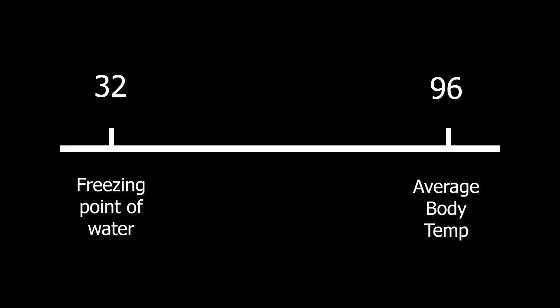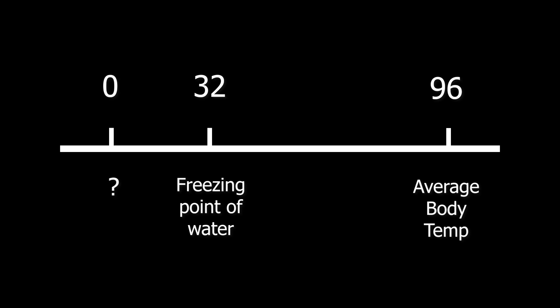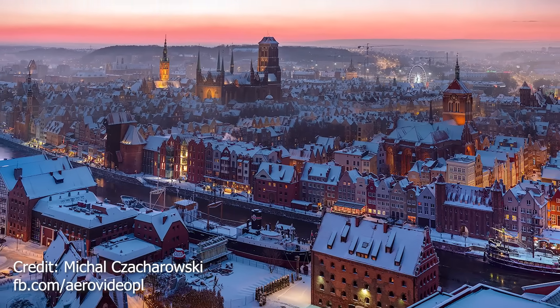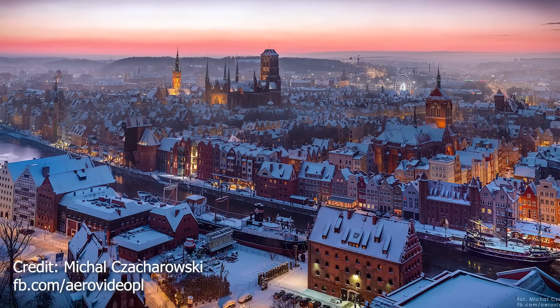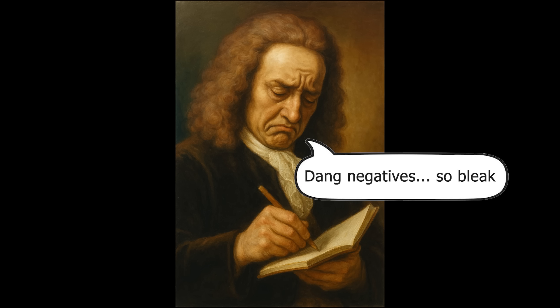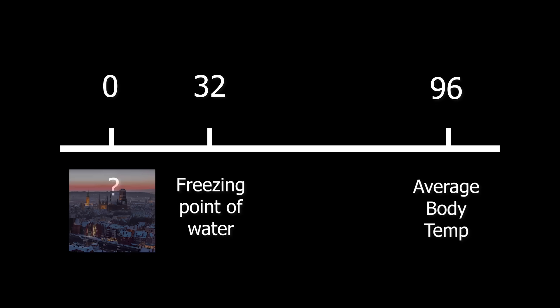But why is the low end set so that 32 is freezing? To answer that, let's look at what zero means in Fahrenheit — and if you think it'll be something obvious, it's not. A common theory is that zero was the lowest recorded temperature of Danzig, Poland, Fahrenheit's hometown. The story goes that Fahrenheit hated writing negative numbers, so he mapped zero on his scale to the coldest temperature he knew so he never had to write negative temperatures.